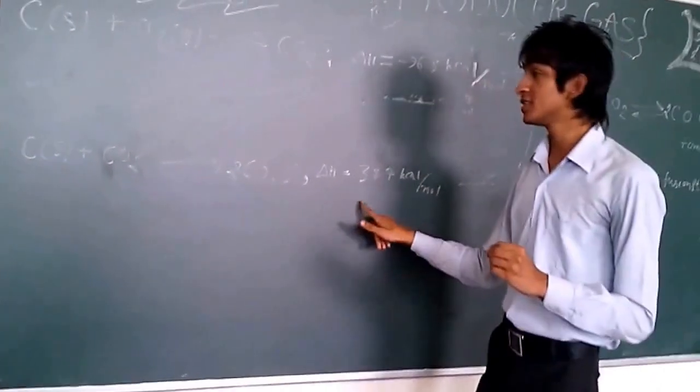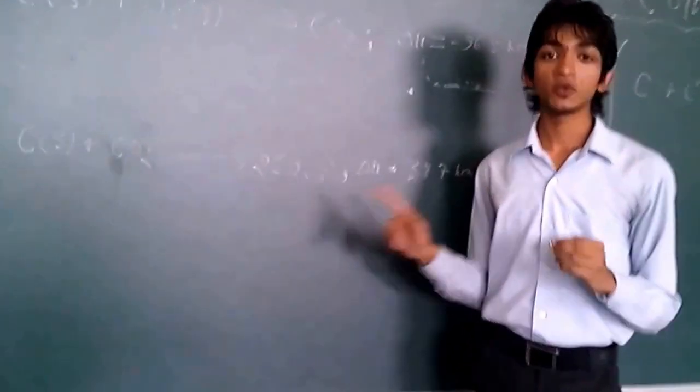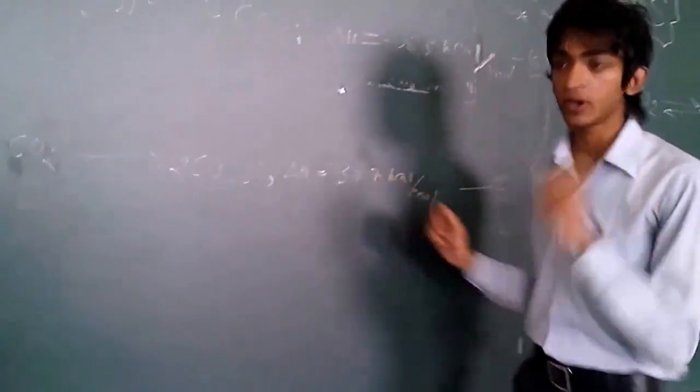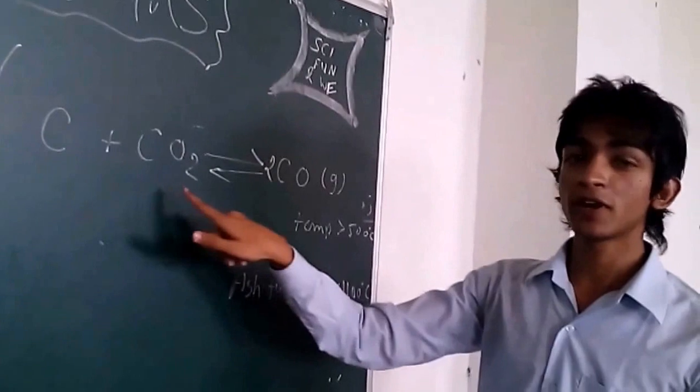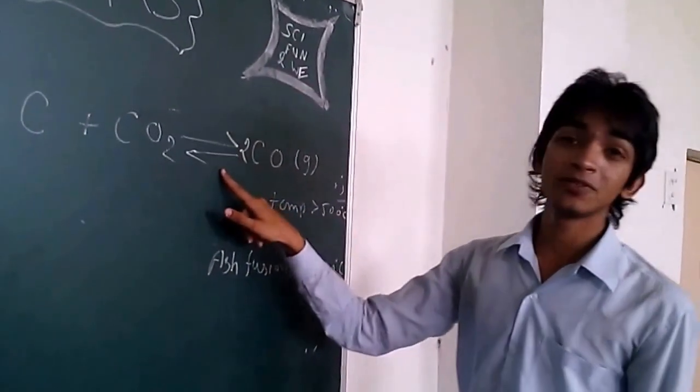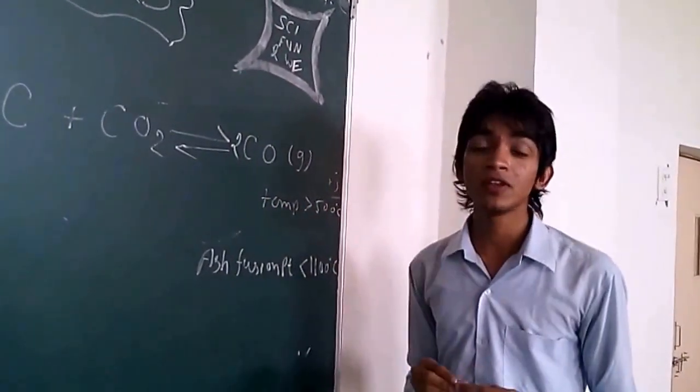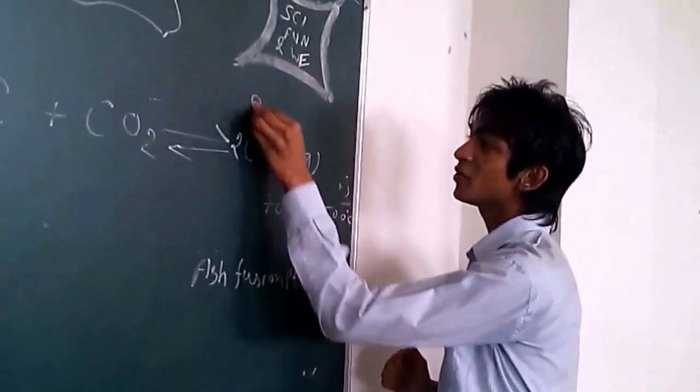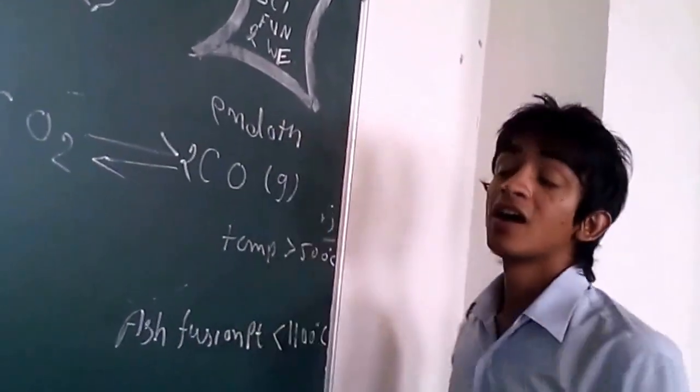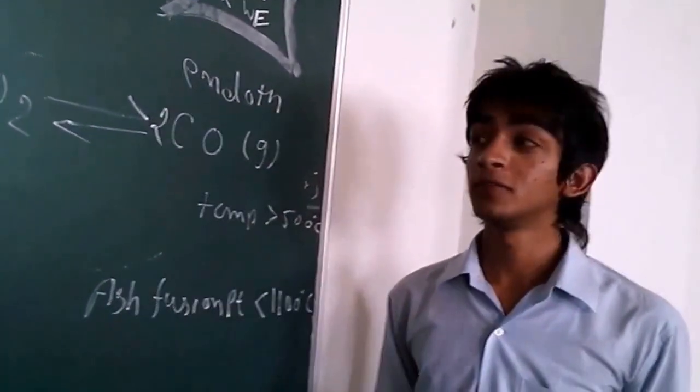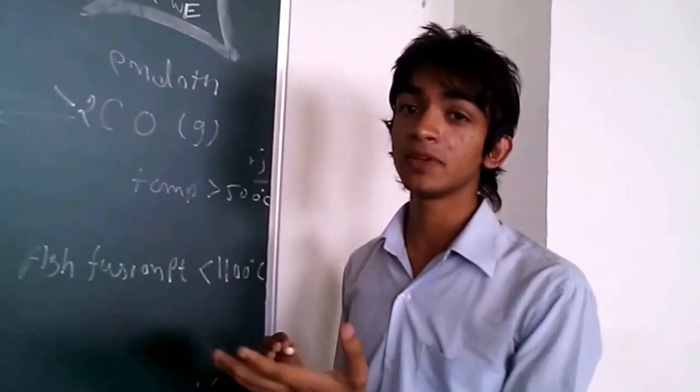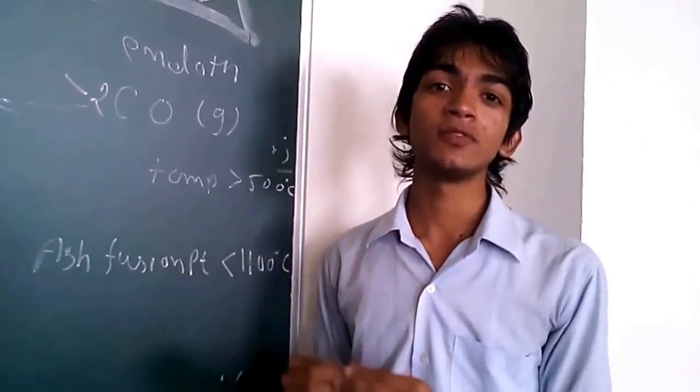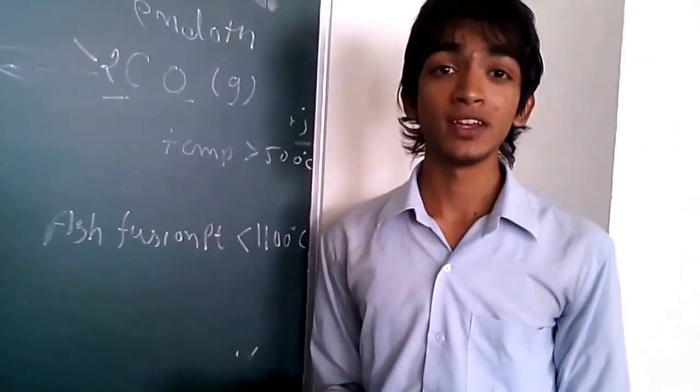Here, this reaction is most important. We have an important principle in this reaction because it is an equilibrium reaction. Look at here: Carbon plus carbon dioxide is in equilibrium with carbon monoxide. And in every equilibrium reaction, as it is endothermic, high temperature will be favorable. As you increase the temperature, it will try to decrease the temperature and the reaction will increase, and the carbon monoxide yield will increase.